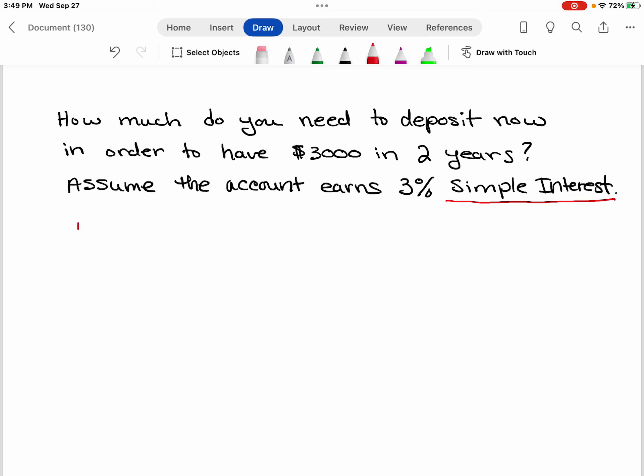So the simple interest formula is I for interest is equal to the principal times the APR, which is your yearly rate, times the number of years.